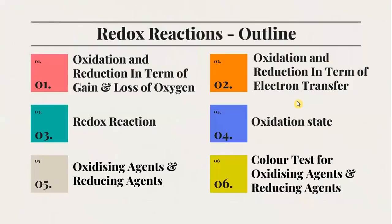Our study outline comprises of oxidation and reduction in terms of gain and loss of oxygen, oxidation and reduction in terms of electron transfer, redox reaction, oxidation state, oxidizing agent and reducing agents, and color test for oxidizing agent and reducing agent.